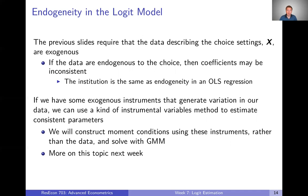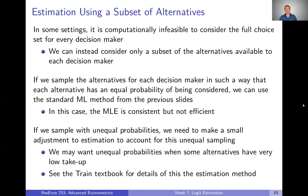We'll talk about that a lot more next week. Another situation you might encounter is that it can be computationally infeasible to consider the full choice set for every decision maker — there are just too many choices. If there are thousands of alternatives for each decision maker, you can't consider them all. You might want to consider only a subset — take a random sample of, say, 10 or 50 alternatives out of the thousand, whatever becomes computationally feasible.